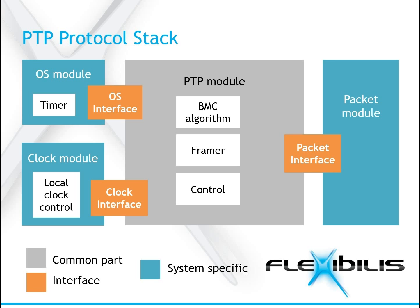A PTP protocol stack is needed to implement PTP ordinary and boundary clock functionalities. It is also needed for supporting peer-to-peer transparent clocks. The only PTP clock type that does not need to implement a PTP protocol stack is end-to-end transparent clock. The Flexibilis implementation of the PTP protocol stack is divided into four modules: PTP module, clock module, operating system specific module, and packet module.